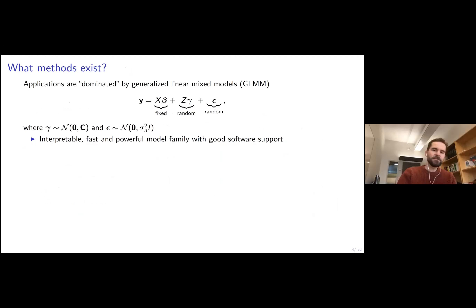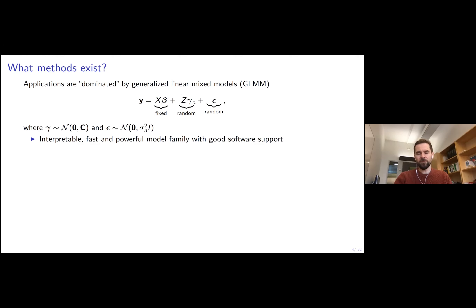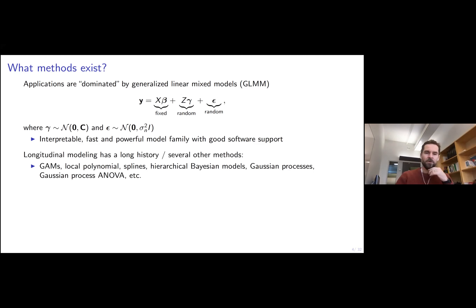So what methods exist? Especially in the biomedical domain, applications are really dominated by different types of generalized linear mixed models. The model can be written with measurements modeled using a linear fixed effect part shared across all subjects, and then random effect parts which model the random effects across groups or individuals, and then additive noise. The model is clearly very interpretable, it's a linear model, it's very fast to solve, still relatively powerful, and has very good software support.